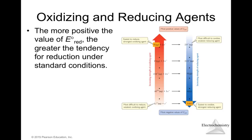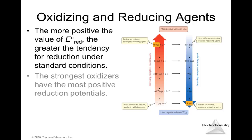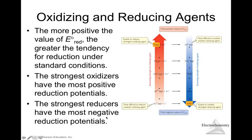Oxidizing and reducing agents: the more positive the reduction potential, the greater the tendency for reduction under standard conditions. A species with a very high reduction potential is a strong oxidizing agent because it readily gets reduced, oxidizing other species. The strongest oxidizing agents have the most positive reduction potentials; the strongest reducing agents have the most negative reduction potentials, as those species are weak oxidizing agents.